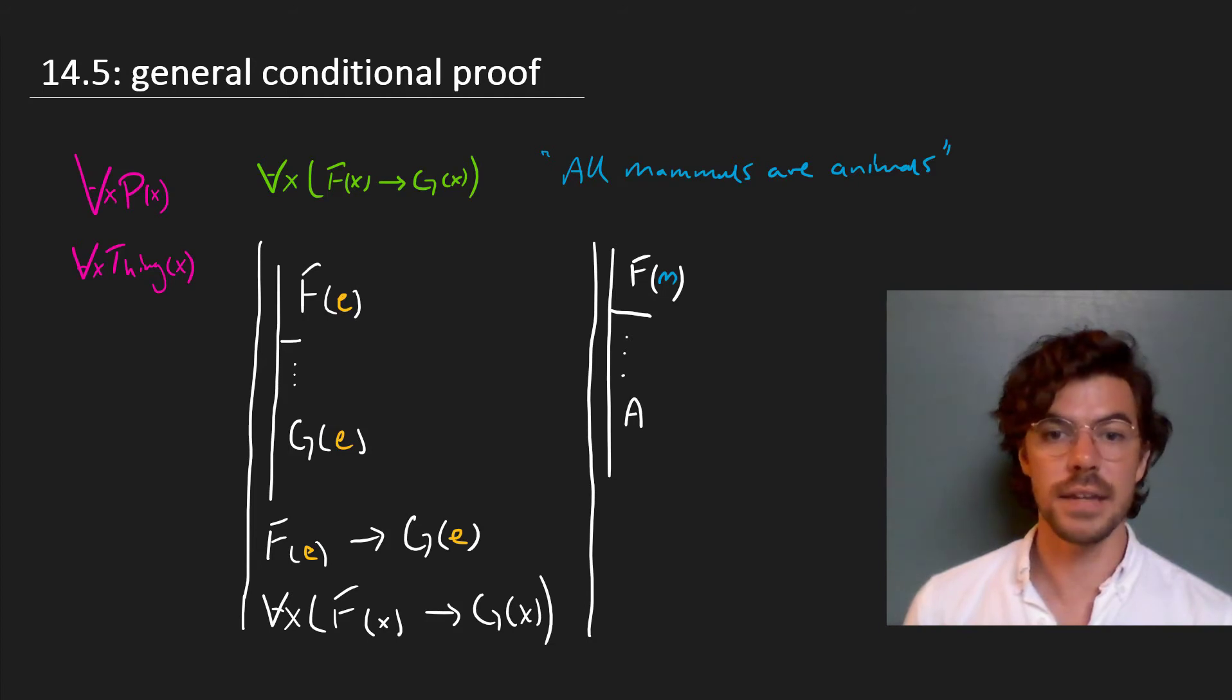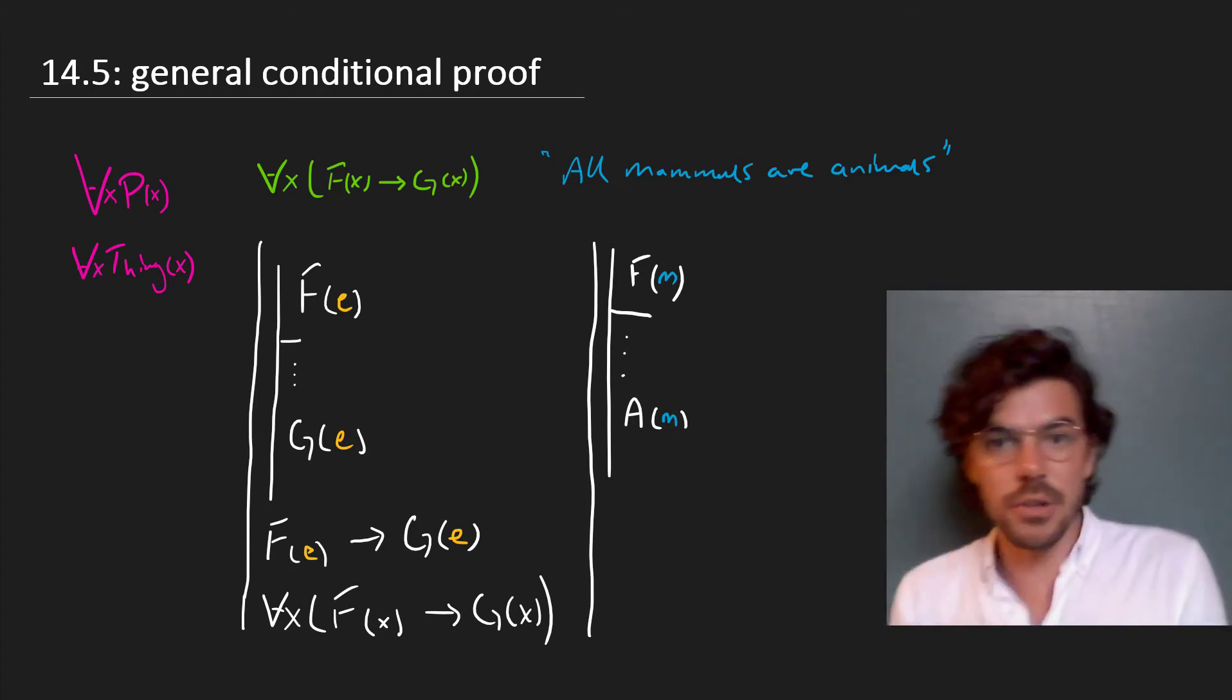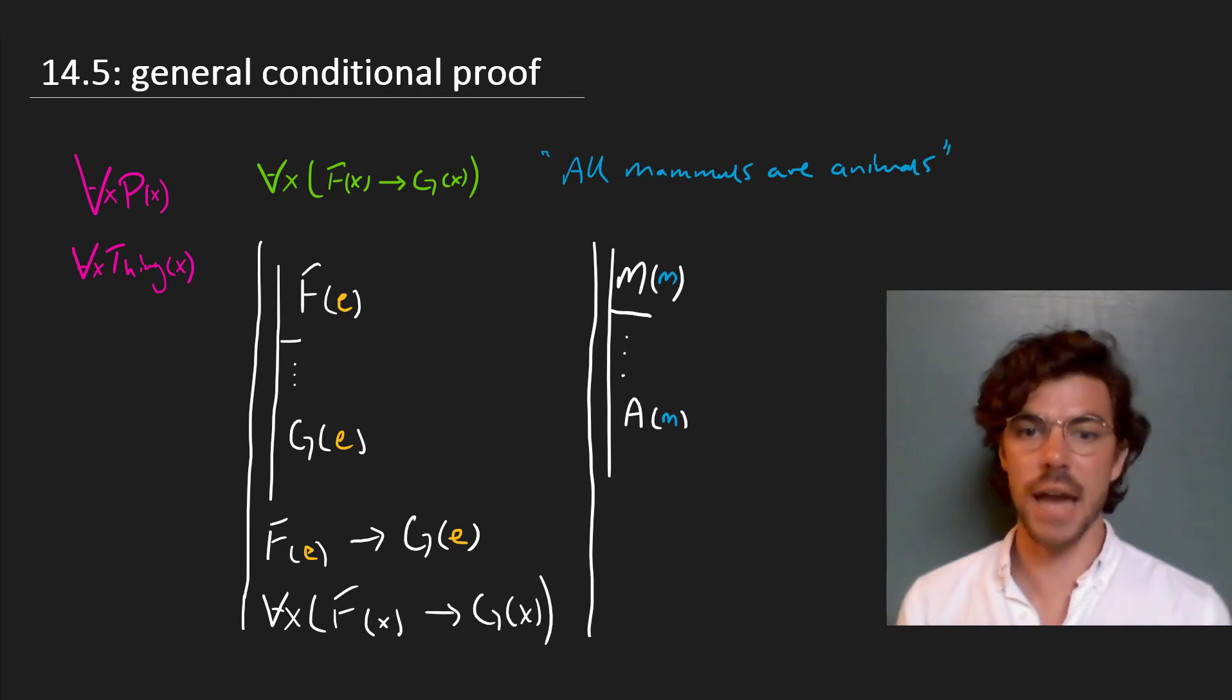And we derive that, in fact, that mammal is an animal. And this entitles us to conclude that all mammals are animals. That is to say, for any arbitrary object picked out by our constant m, if m is a mammal, perhaps it would make it a little bit clearer to change this F to an m. If m is a mammal, then m is an animal.